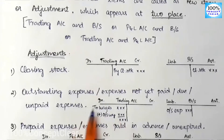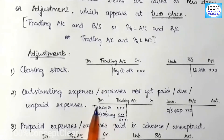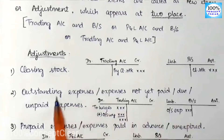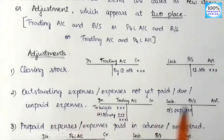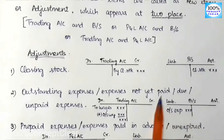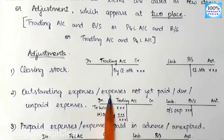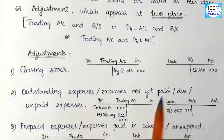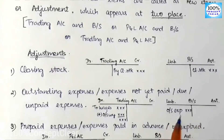Outstanding expenses are not a debit in the trial balance — they include outstanding wages, outstanding salaries, outstanding rent, and outstanding expenses. On the balance sheet, outstanding expenses appear on the liability side, because the amount has not been paid yet — it will be paid next year. That means we have a liability in the balance sheet.